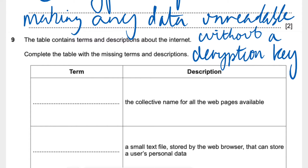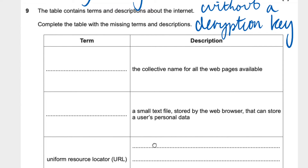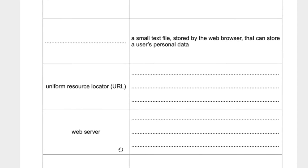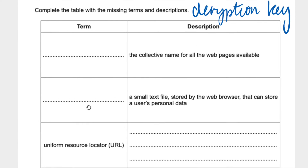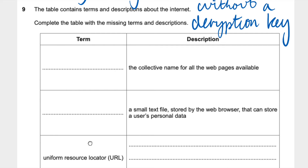Question 9: The table contains terms and descriptions about the internet. Complete the table with the missing terms and descriptions. For the first two, we just need a term — we've been given the description. For the next two, we need the description. And for the last two, we need the term. Starting with the top two: the collective name of all the web pages available — that's the WWW, or the World Wide Web. A small text file stored by a web browser that can store a user's personal data — this would be a cookie.